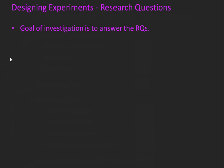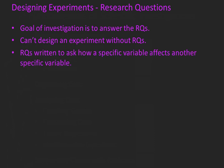First, let's take a look at designing experiments, and that all begins with the research question. Because the goal of the investigation is to answer the research question or questions. We can't design an experiment without research questions. That's how vital they are to the design process. We write research questions to ask how a specific variable affects another specific variable.